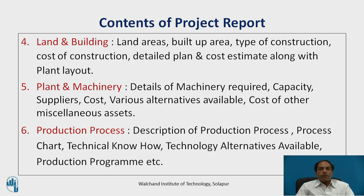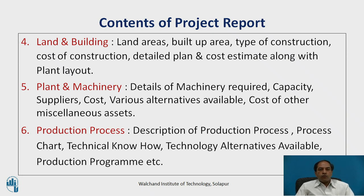Land and building: what is the area available, what is the built-up area requirement, what is the type of construction — temporary or permanent — and what is the cost of construction, detailed plan, cost estimate along with plant layout. We also need to have legal compliances related to land and building, approvals from various government agencies, and most importantly a building license — a permission to use or permit to use — before you are allowed to use that land and building for the particular purpose.